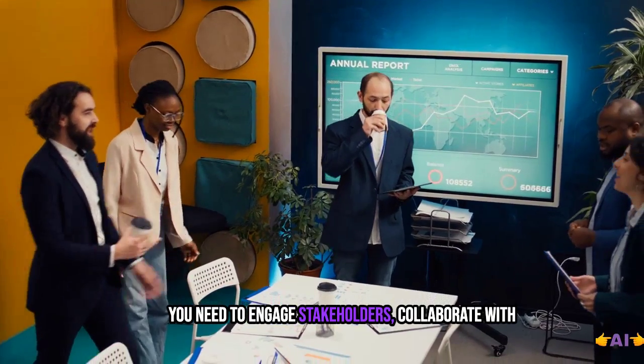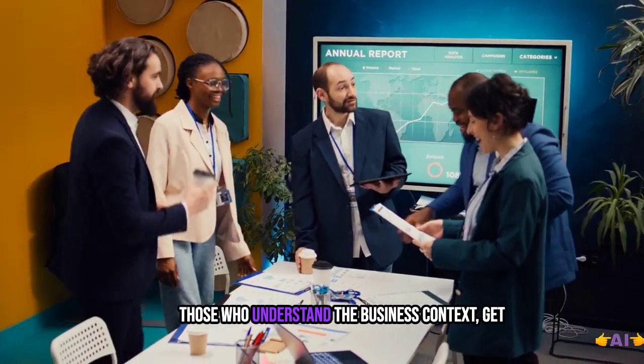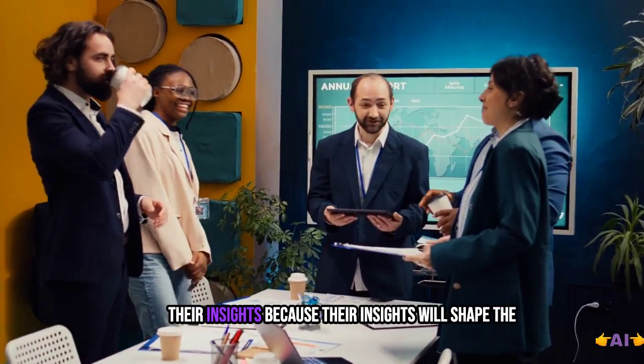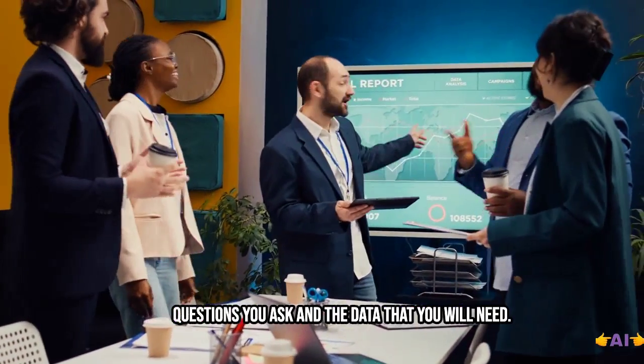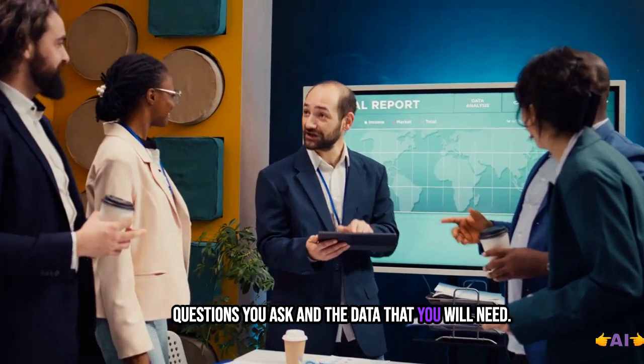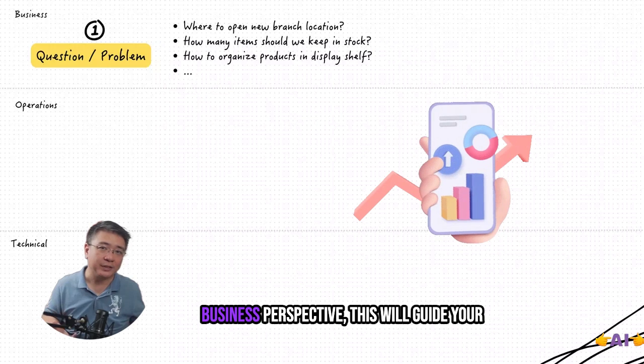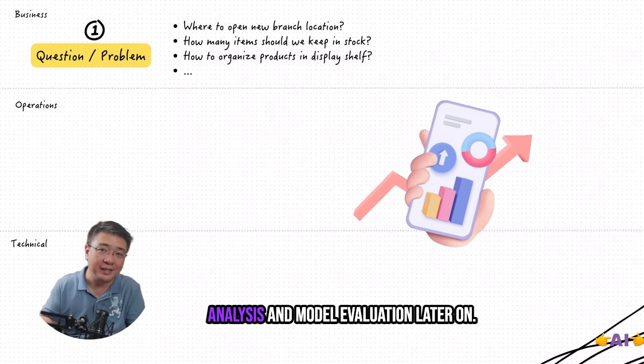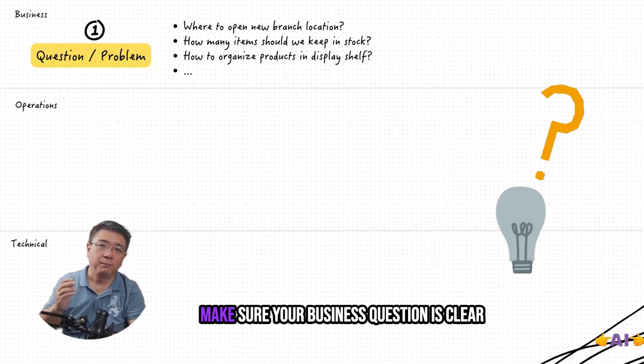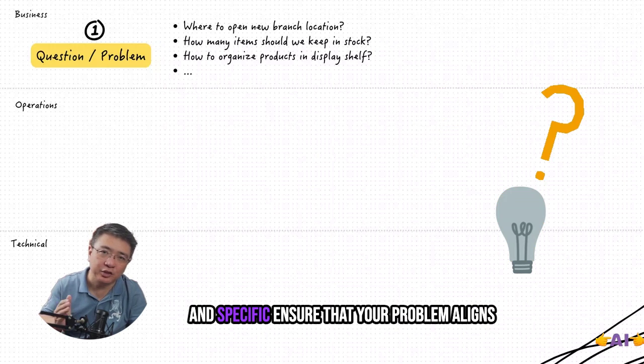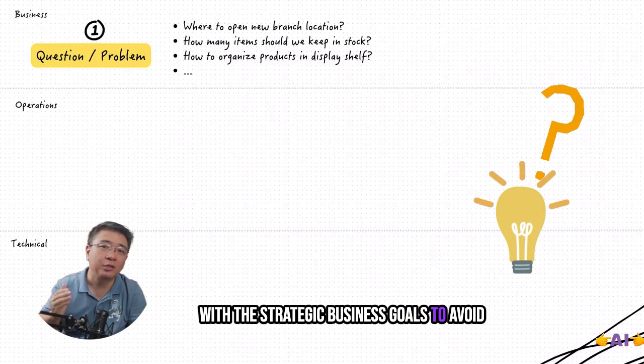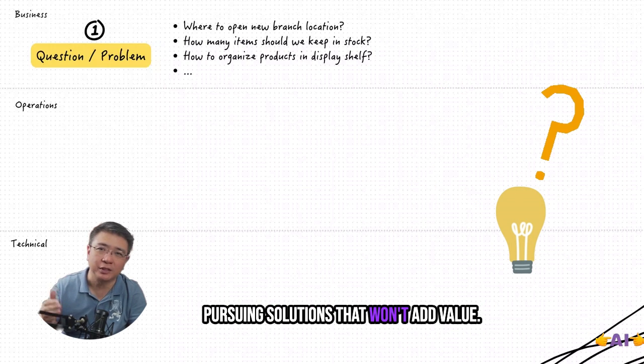Aside from this, you need to engage stakeholders, collaborate with those who understand the business context, get their insights because their insights will shape the questions you ask and the data that you will need. Of course, you need to define your success metrics. What does success look like from the business perspective? This will guide your analysis and model evaluation later on. Make sure your business question is clear and specific. Ensure that your problem aligns with the strategic business goals to avoid pursuing solutions that won't add value.